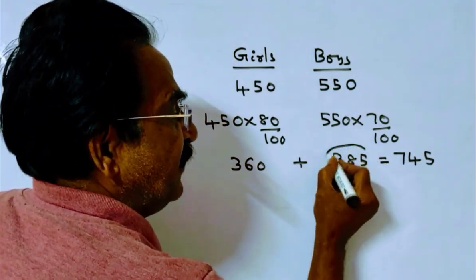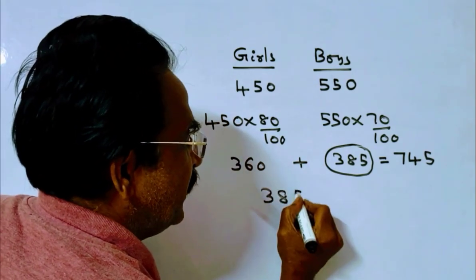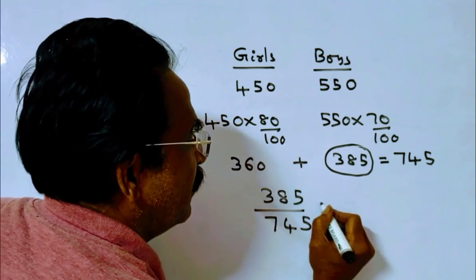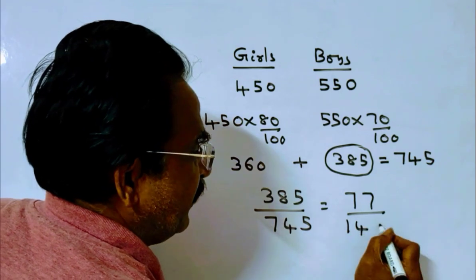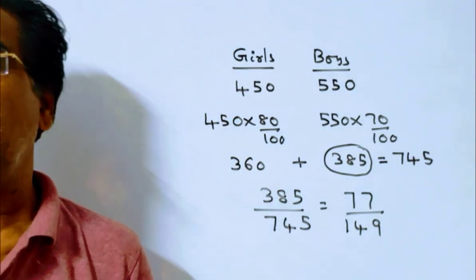Of which 385 are boys. So required probability is 385 over 745. Simplifying: 5 goes into both, giving 77 over 149. 77 by 149 is the required probability.